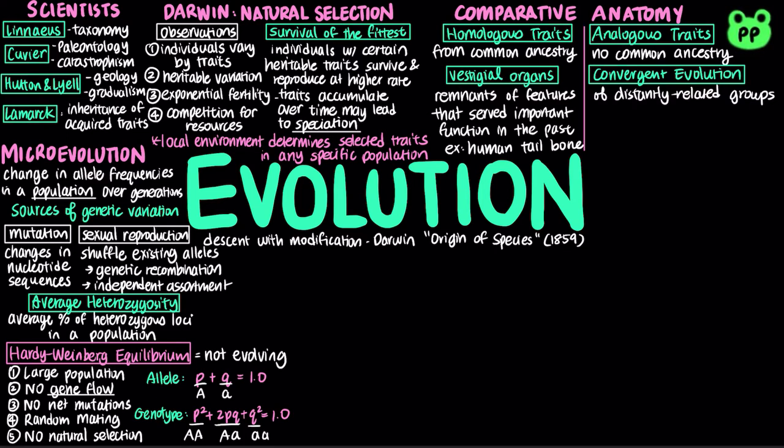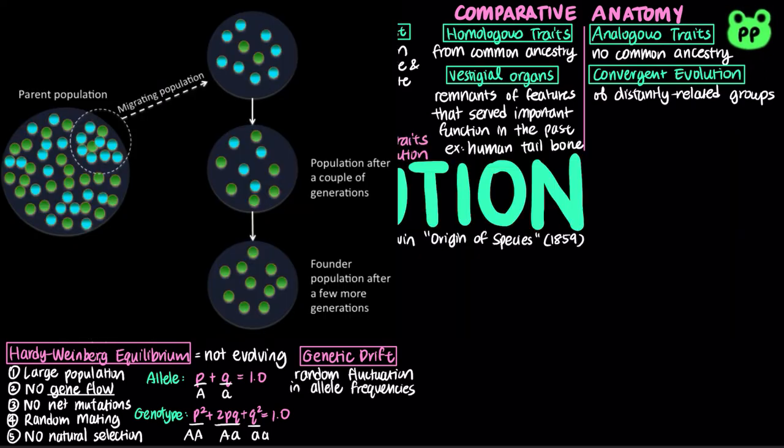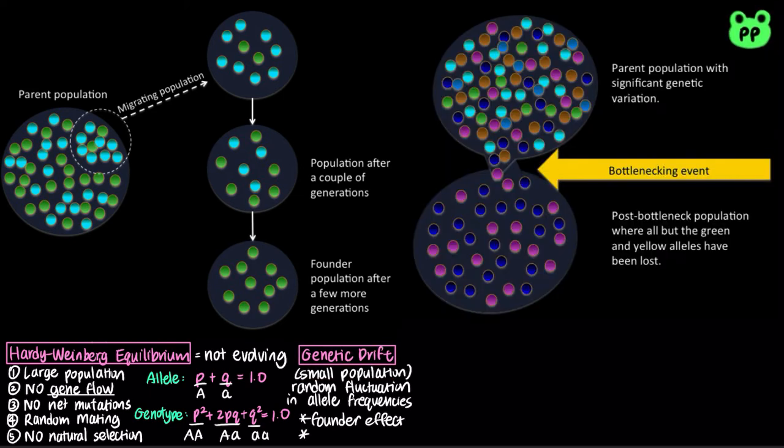Hardy-Weinberg equilibrium requires large population, because small population is often subject to genetic drift, which is the random fluctuation in allele frequencies from one generation to the next. The founder effect occurs when a few individuals become isolated from a larger population. Allele frequencies in the small founder population can be different from those in the larger parent population. The bottleneck effect is a sudden reduction in population size due to a change in environment, such as a natural disaster. The resulting gene pool may no longer be reflective of the original population's gene pool.